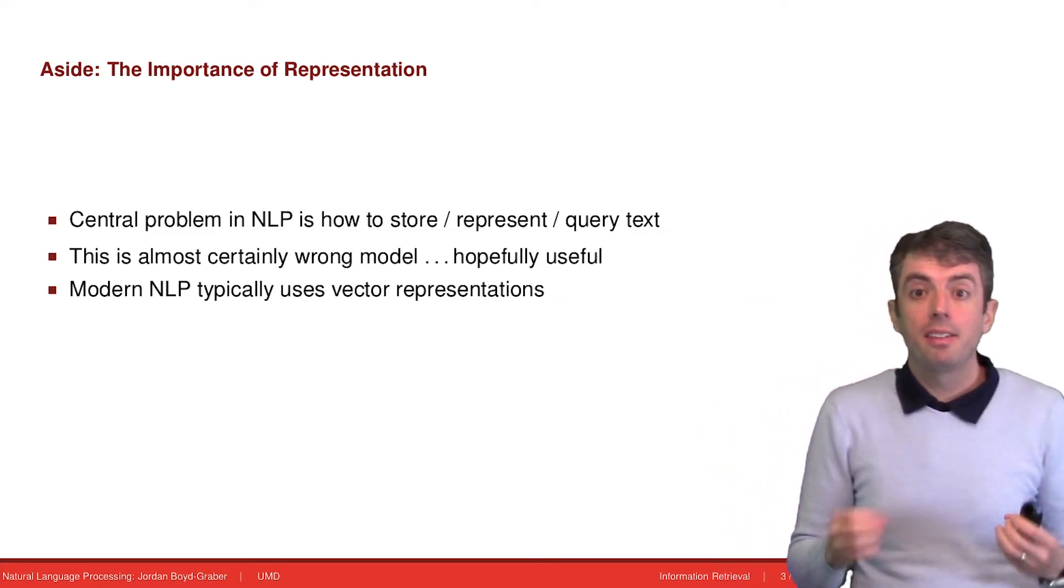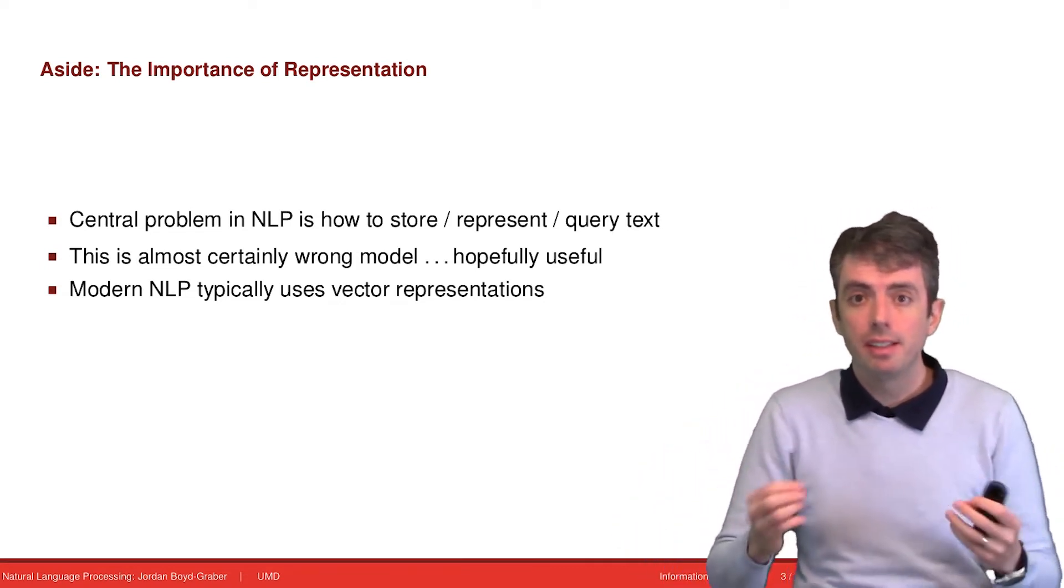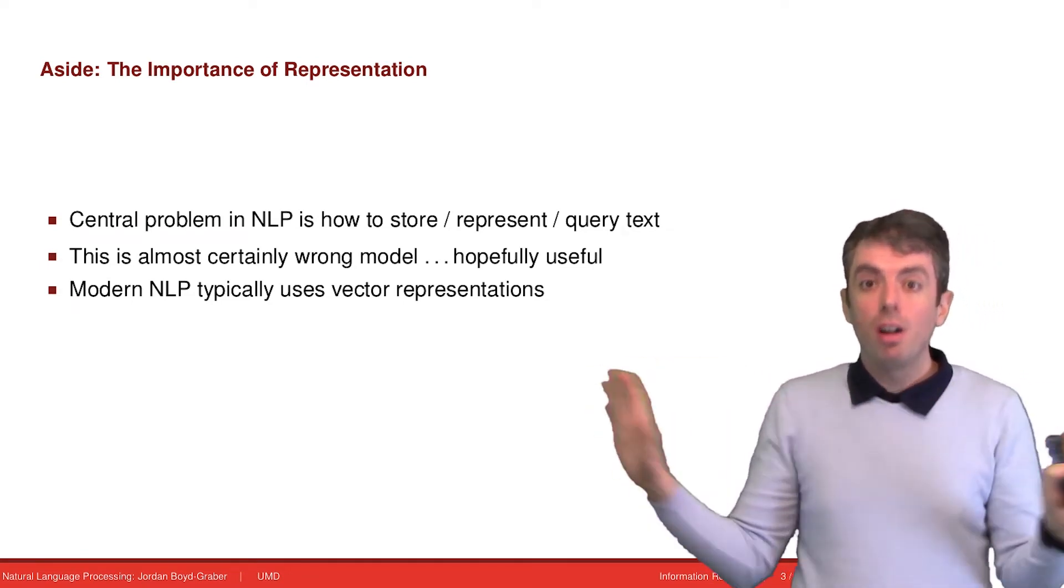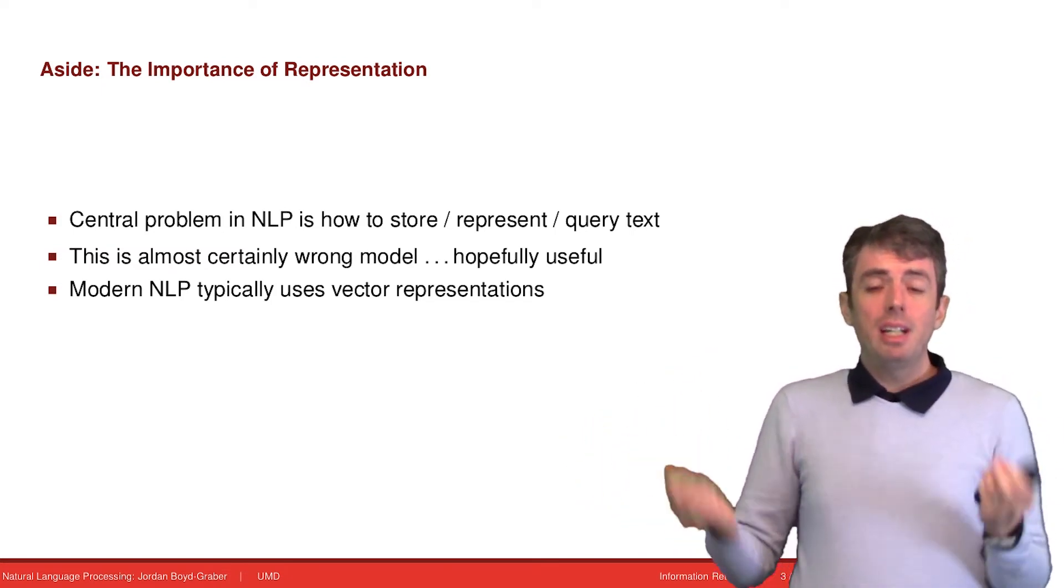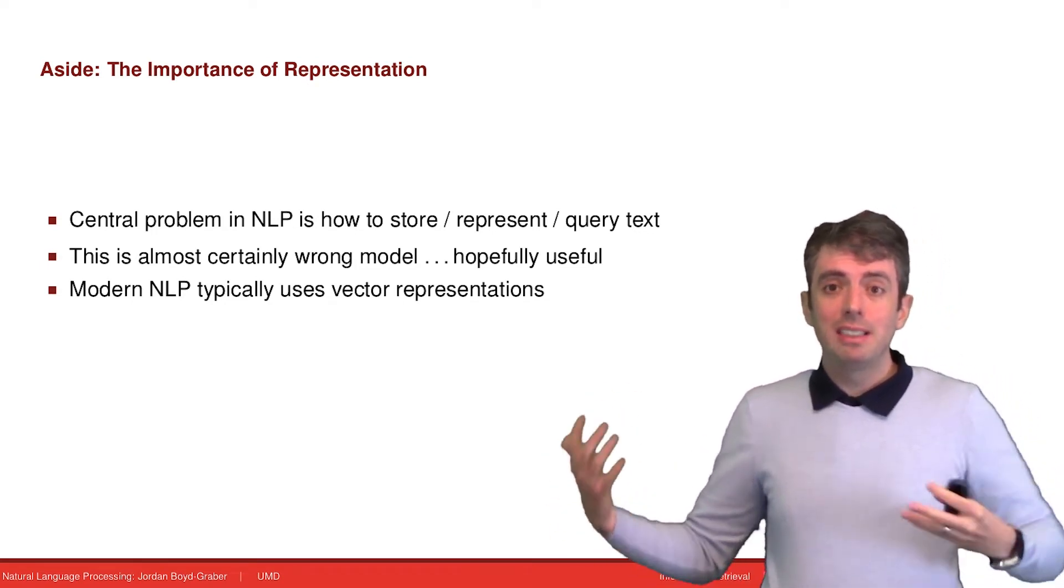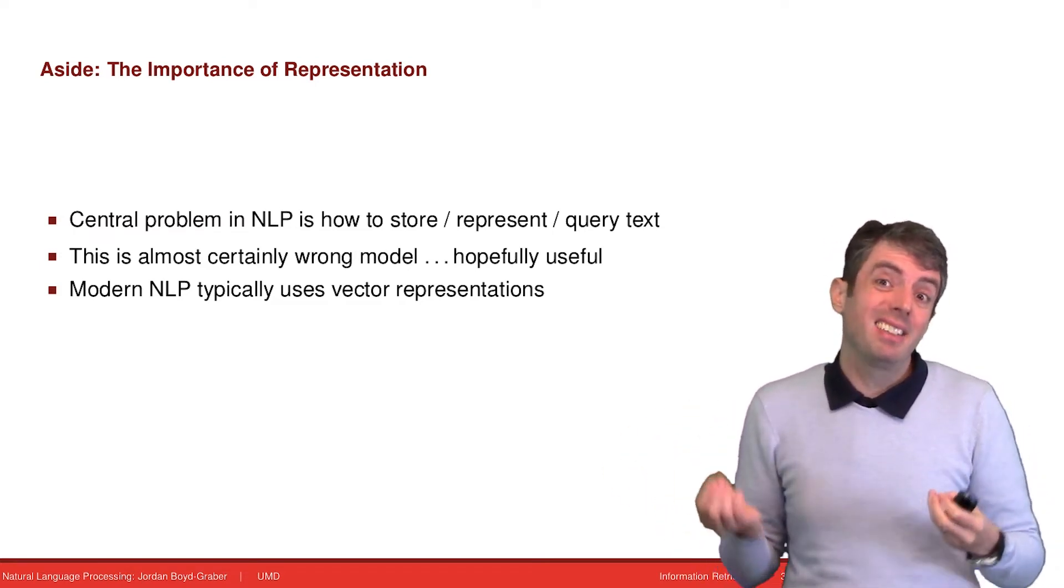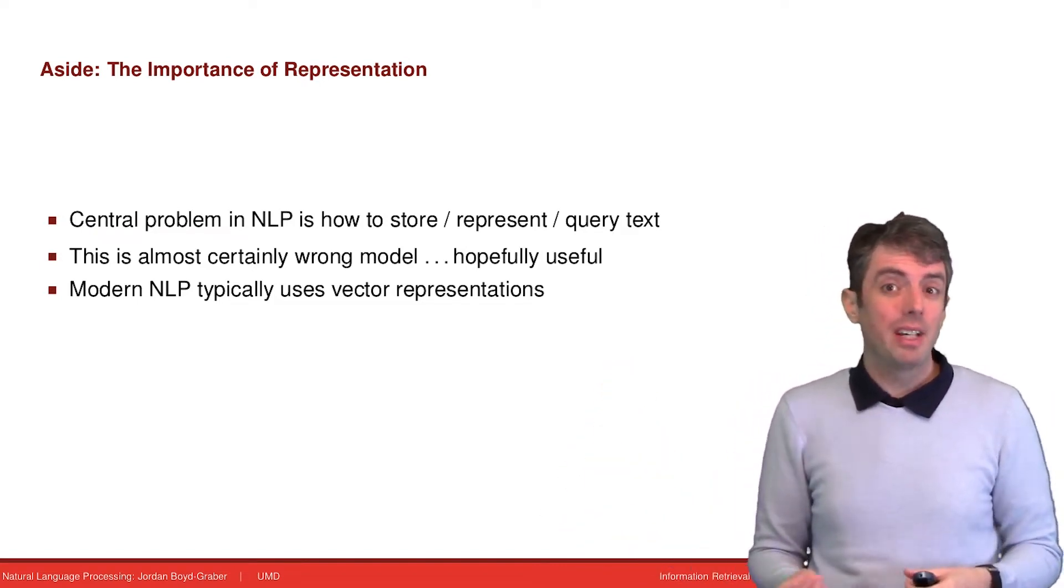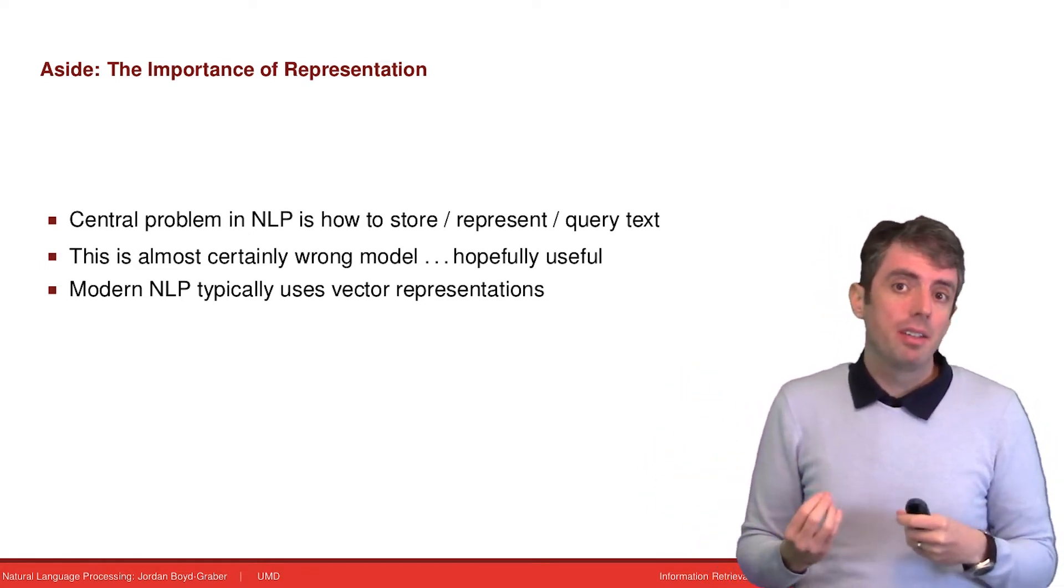Modern natural language processing uses vectors to try to answer all of these questions. We're going to use vector representations for documents, for sentences, for words. Let me just say right off the bat that this representation is wrong. It doesn't do everything that a human could do. But computers can do a lot with these vector-based representations. And at the moment, it's the best that we've got, and it works relatively well.